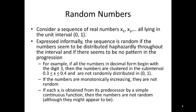If the numbers are monotonically increasing, they're also not random. If each xi is obtained from its predecessor by a simple continuous function, then the numbers are not random, even though they might appear to be.